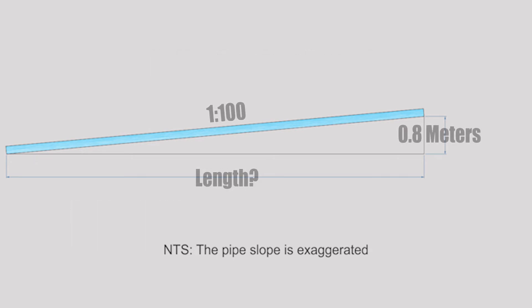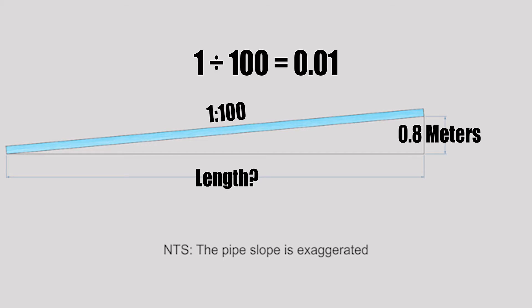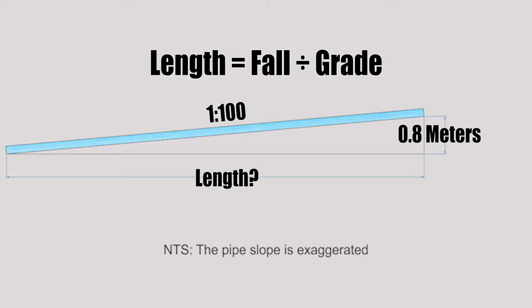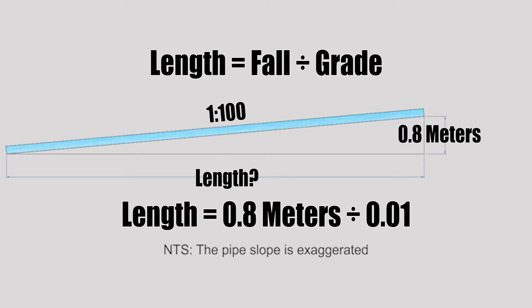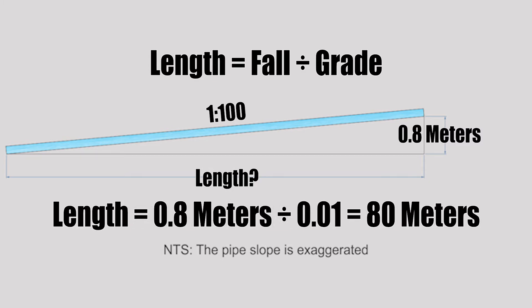The next example is a pipe graded at 1 in 100 with a total fall of 0.8 meters, and we want to find the overall length. First, turn the grade into a usable number: 1 divided by 100 equals 0.01. Applying the formula — length equals fall divided by grade — with a fall of 0.8 meters and a grade of 0.01, we get an overall length of 80 meters.